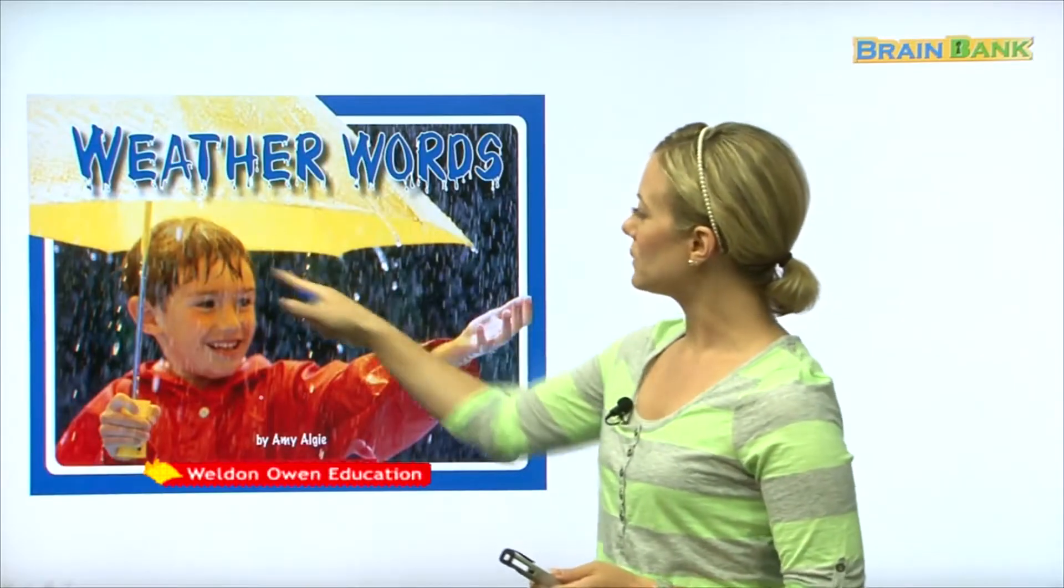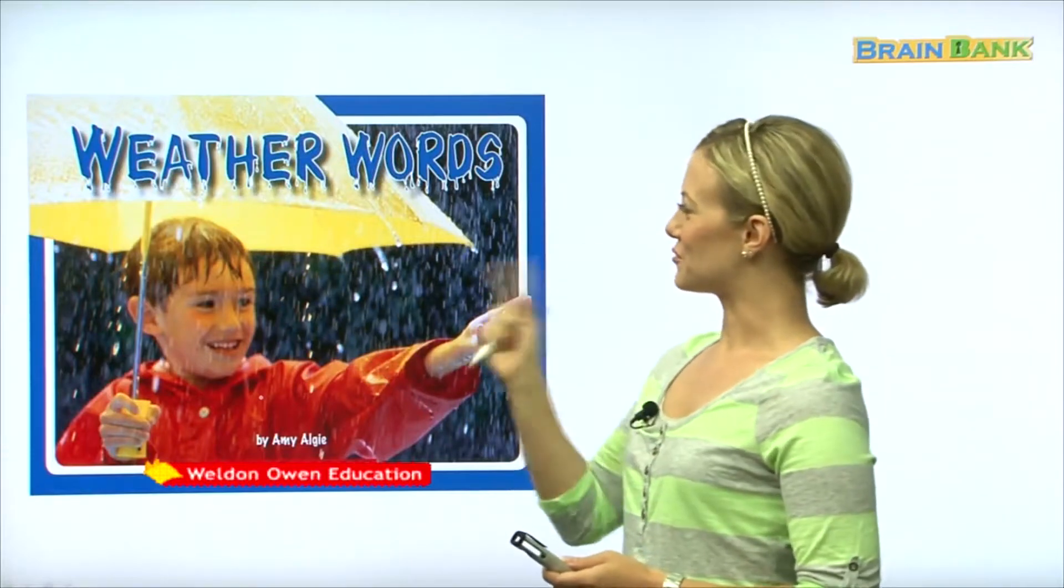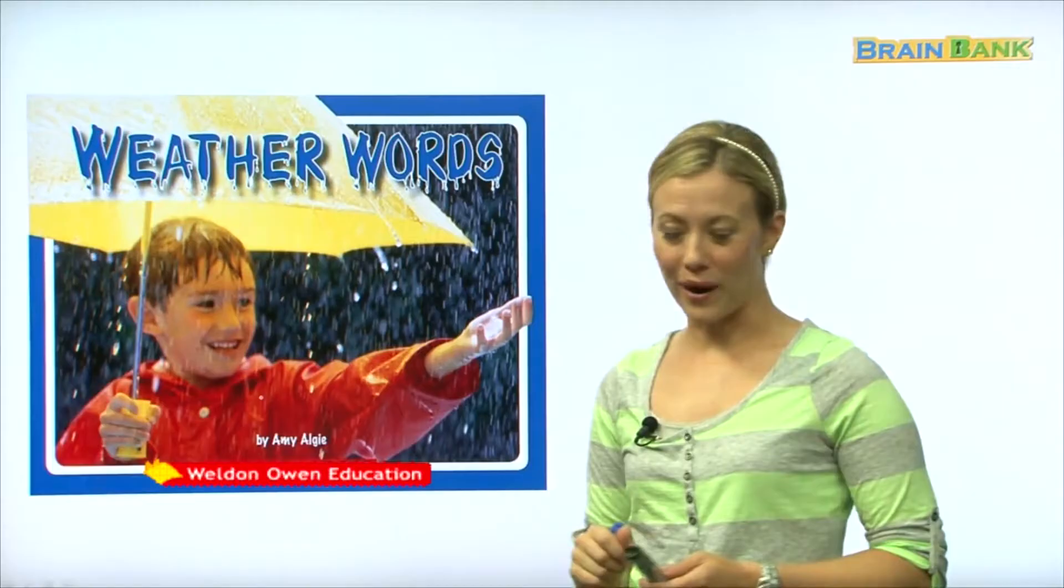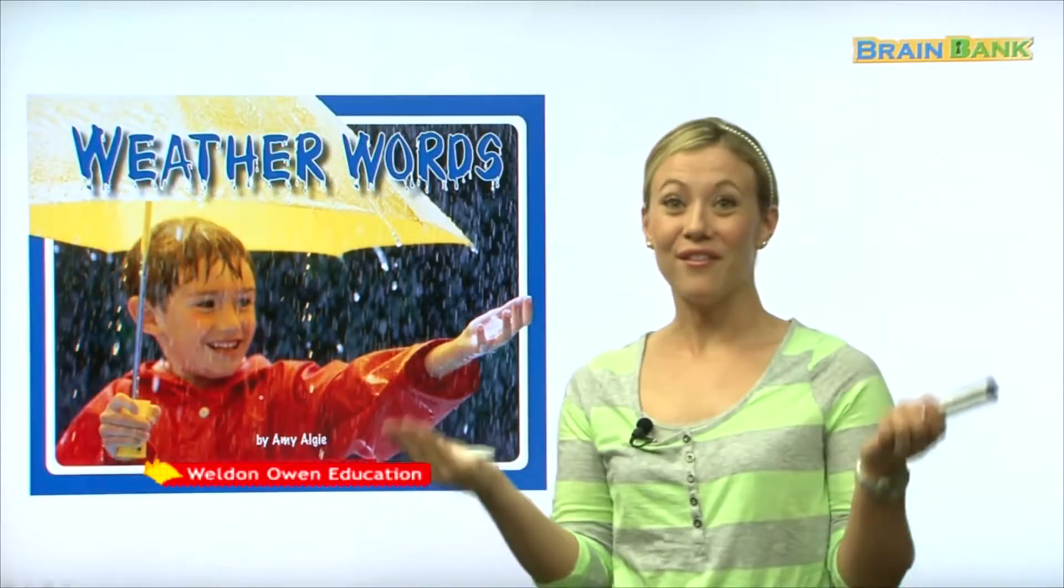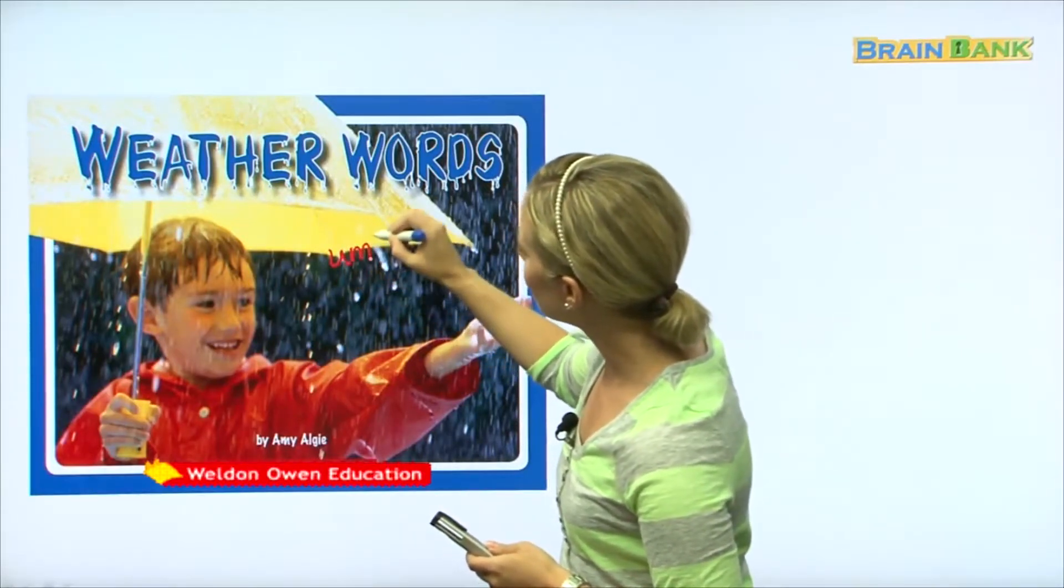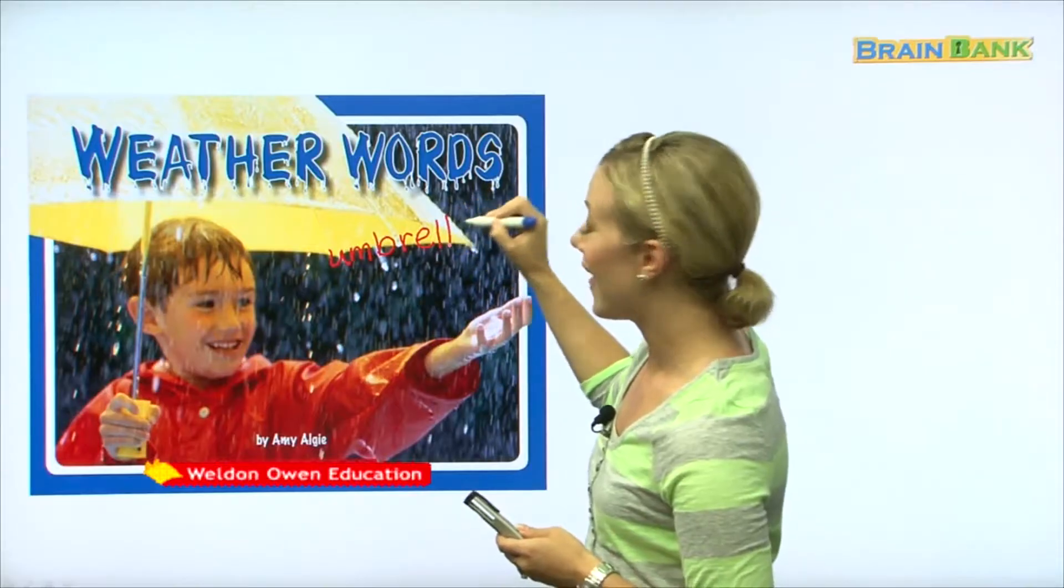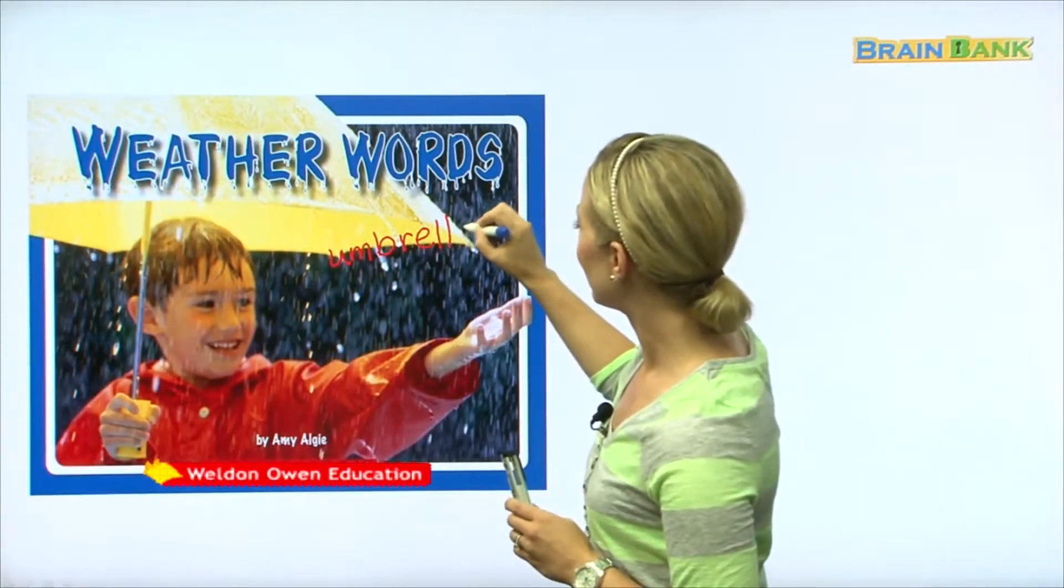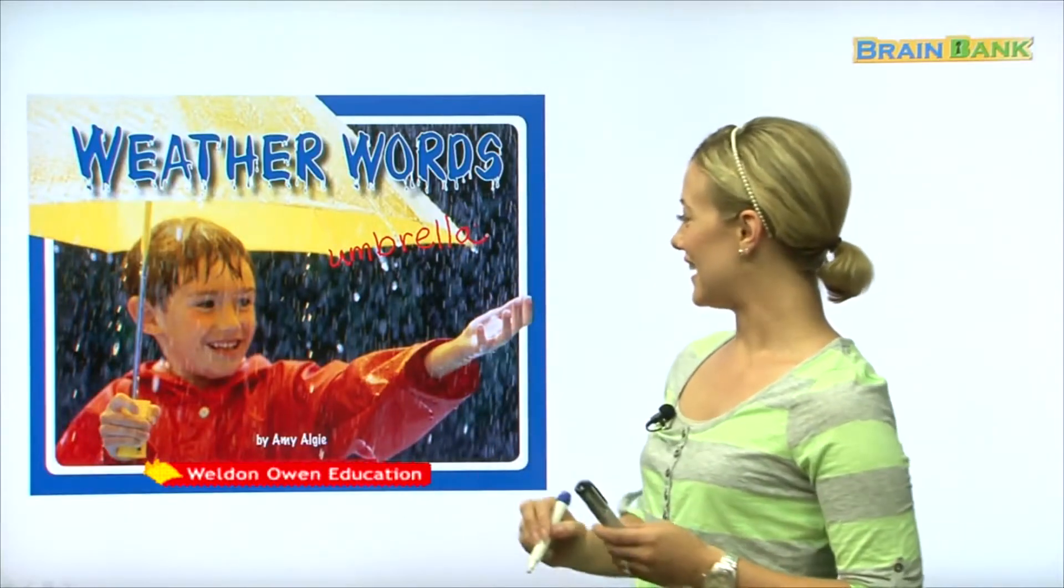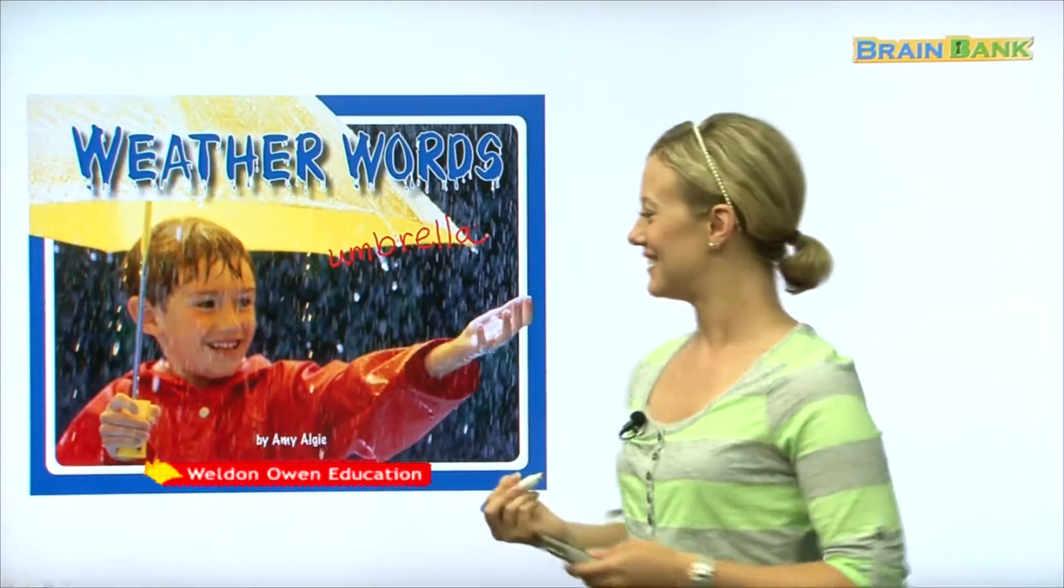And what is he holding? What is this big yellow thing above his head? That's right, he is holding an umbrella. Does anyone know how we spell that word? Let's try it: U-M-B-R-E-L-L-A, there's two L's. And he looks like he doesn't mind getting wet even though he has an umbrella because he's reaching his hand out to catch the rain. So let's read this story, it looks fun right?